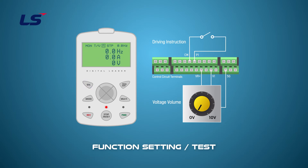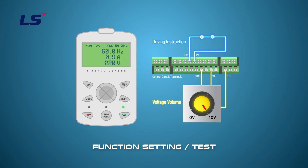The potentiometer for voltage input to which V1 is connected is maximized, and the P1 terminal with forward operation FX is turned on. You can see that the output frequency on the keypad starts at 5 Hz.